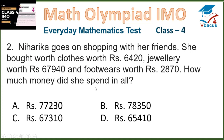Let us go to the next sum. Niharika goes shopping with her friends. She bought clothes worth Rs. 6,420, jewellery worth Rs. 67,940, and footwear worth Rs. 2,870. How much money did she spend in all? We have to add whatever money she has spent — 6,420 plus 67,940 plus 2,870.